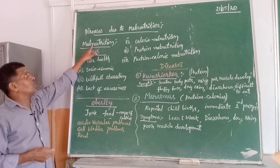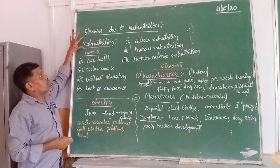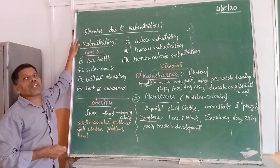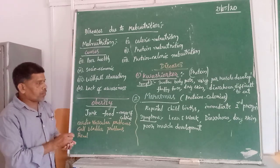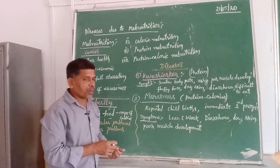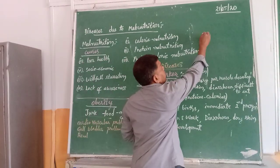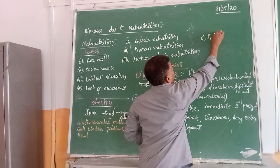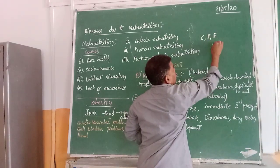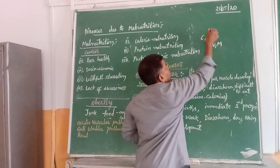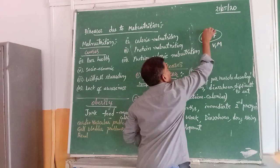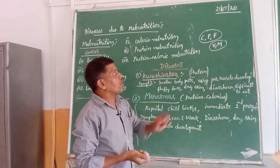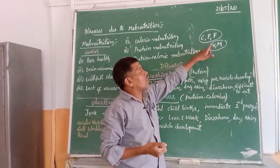What do you mean by malnutrition? Taking the food not containing proper nutrients. Generally we know that we need to take food containing different types of nutrients — carbohydrates, proteins, fats, vitamins and minerals. These food materials which we are taking are the nutrients.